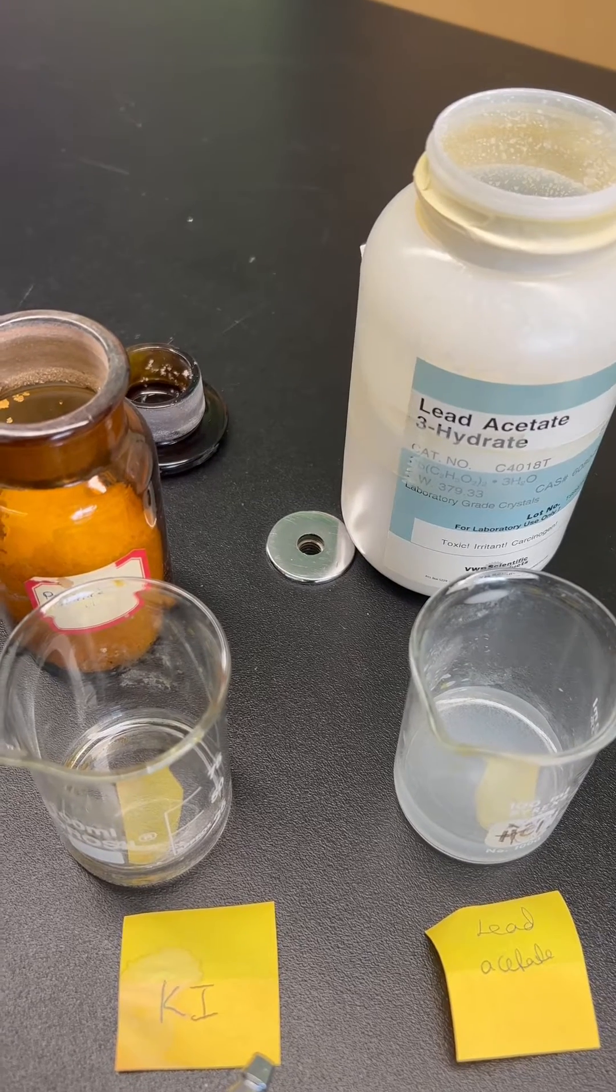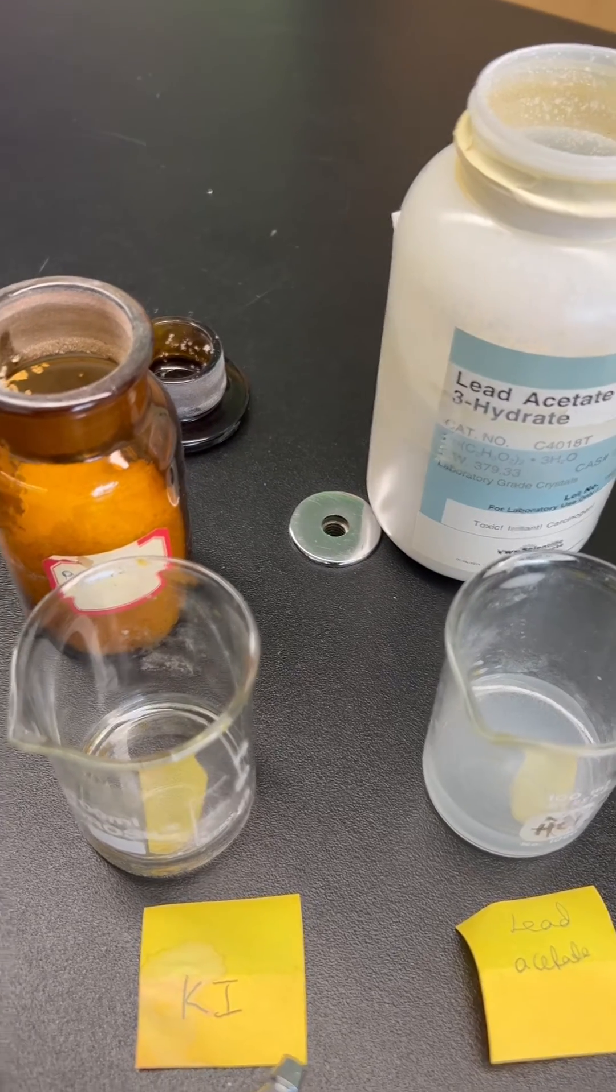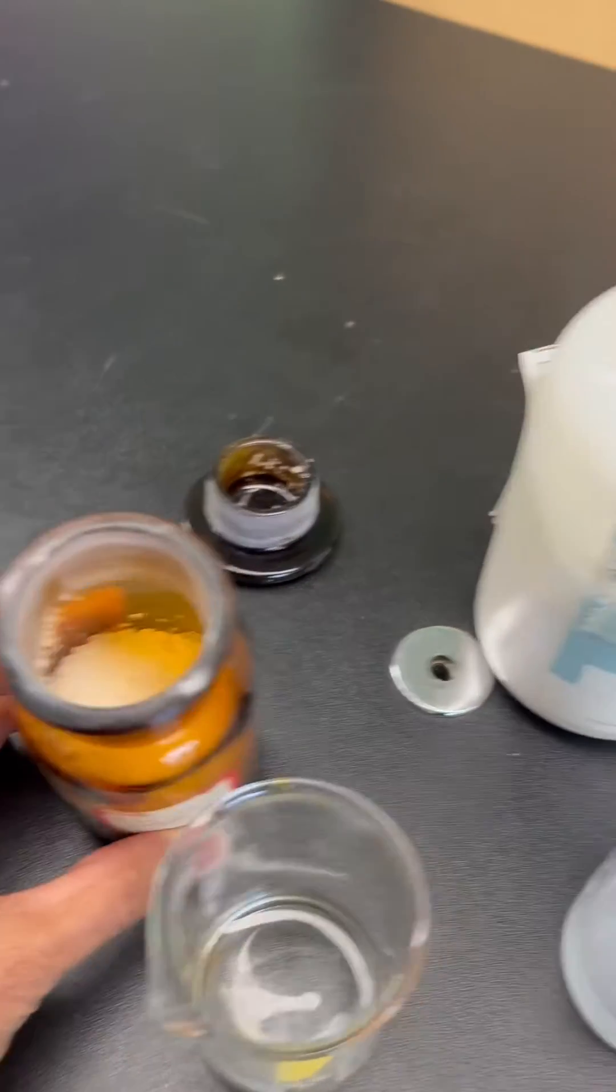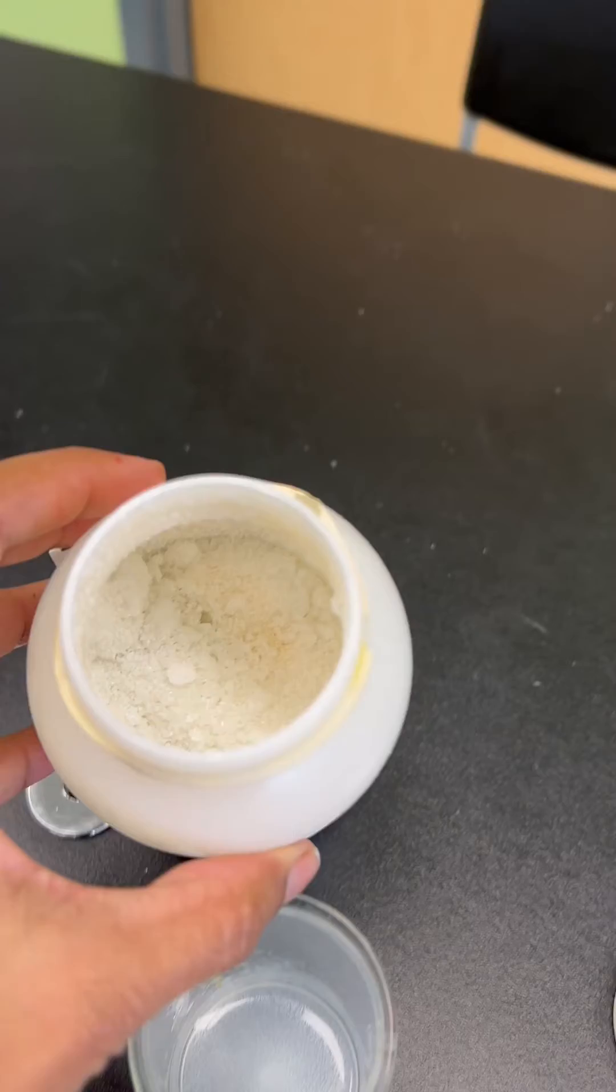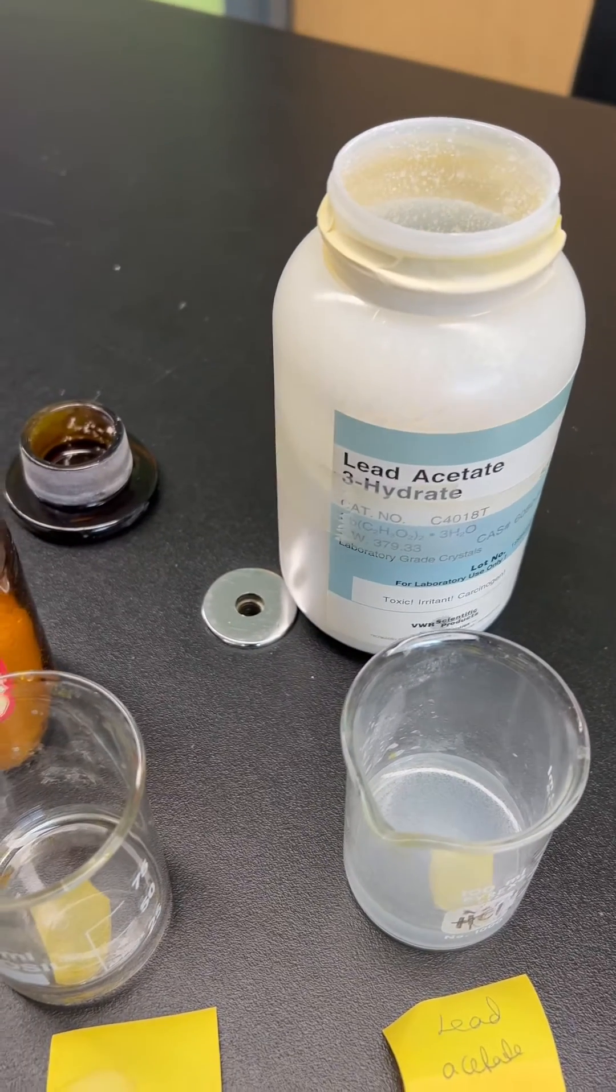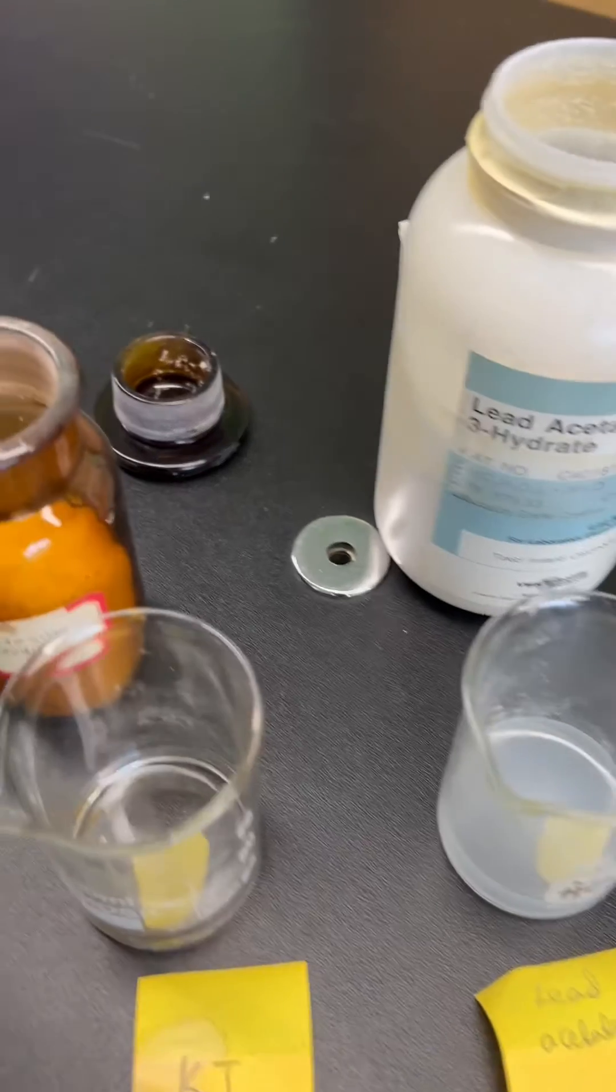Hi guys, so today we are going to do a double displacement reaction. I'm using potassium iodide, which is a white crystalline solid, and lead acetate, which is also a white crystalline solid. You can also use lead nitrate.